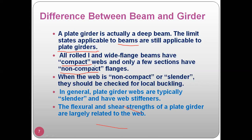If the beam is compact it's less of an issue, but when it is non-compact or slender, you definitely have to check for local buckling because webs will undergo buckling. You already know how to check whether a section falls under compact, semi-compact, or slender using width-to-thickness ratios from table number two. Based on that, you can differentiate which class your beams fall under.